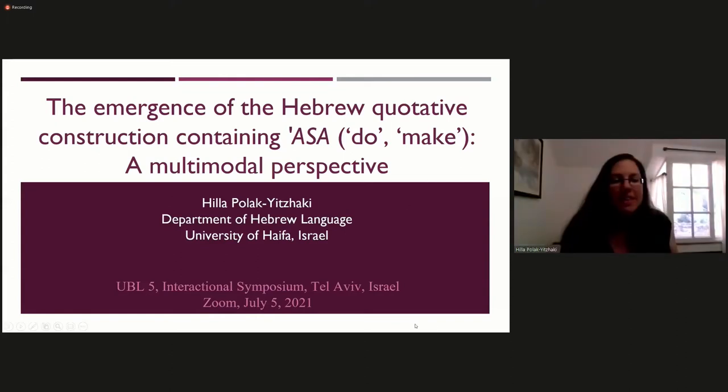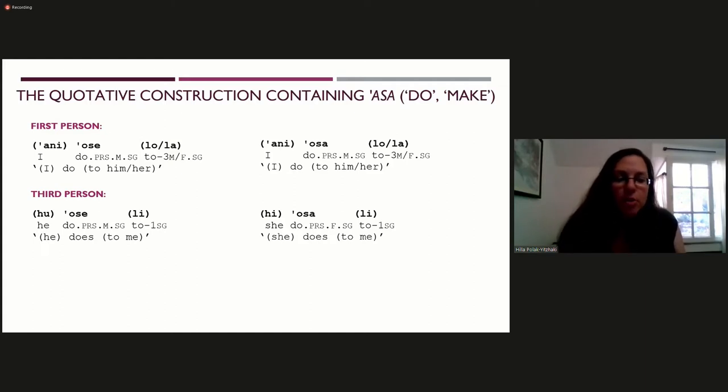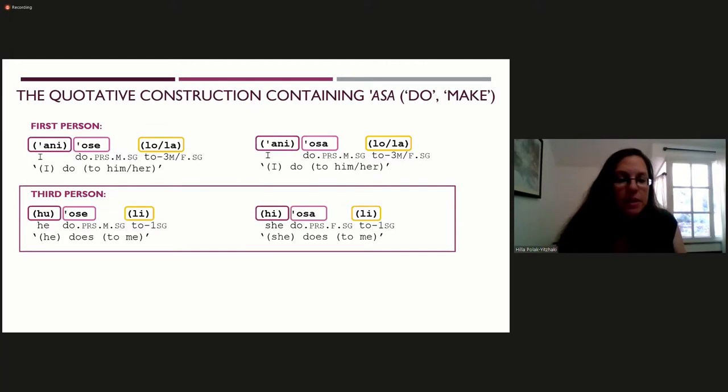Hello, everyone. In this presentation, I focus on the Hebrew Quotative Construction Containing Asa, roughly equivalent to English Do or Make, in everyday video conversations. This construction, introducing reported speech or constructed dialogue to follow Tennant's term, is composed of an optional personal pronoun followed by the present tense verb in masculine osseh or feminine ossa, followed by an optional dative pronoun. Most tokens are in third person.